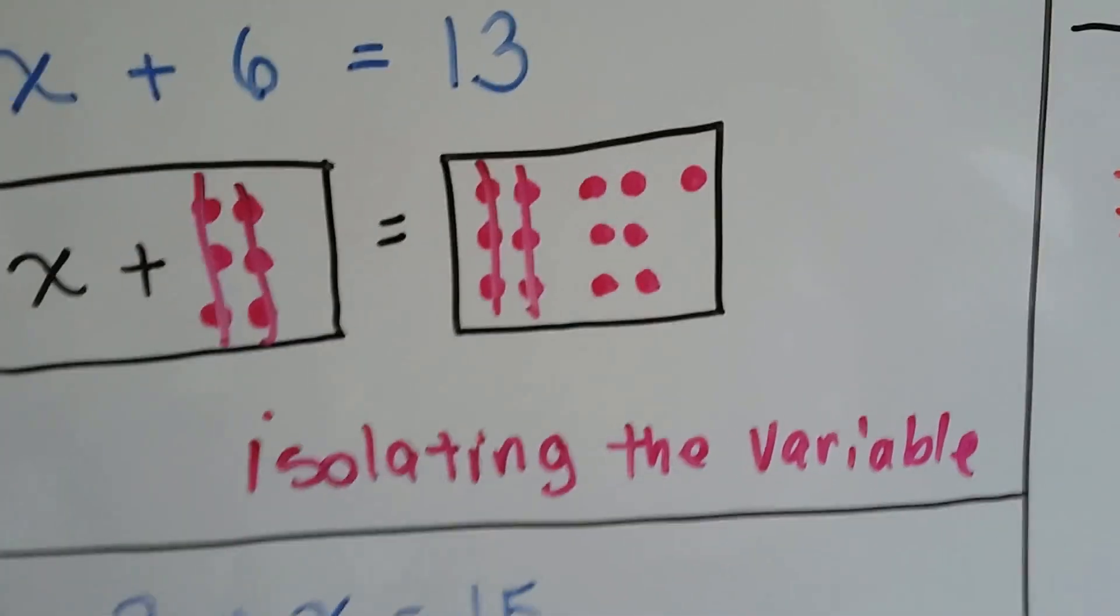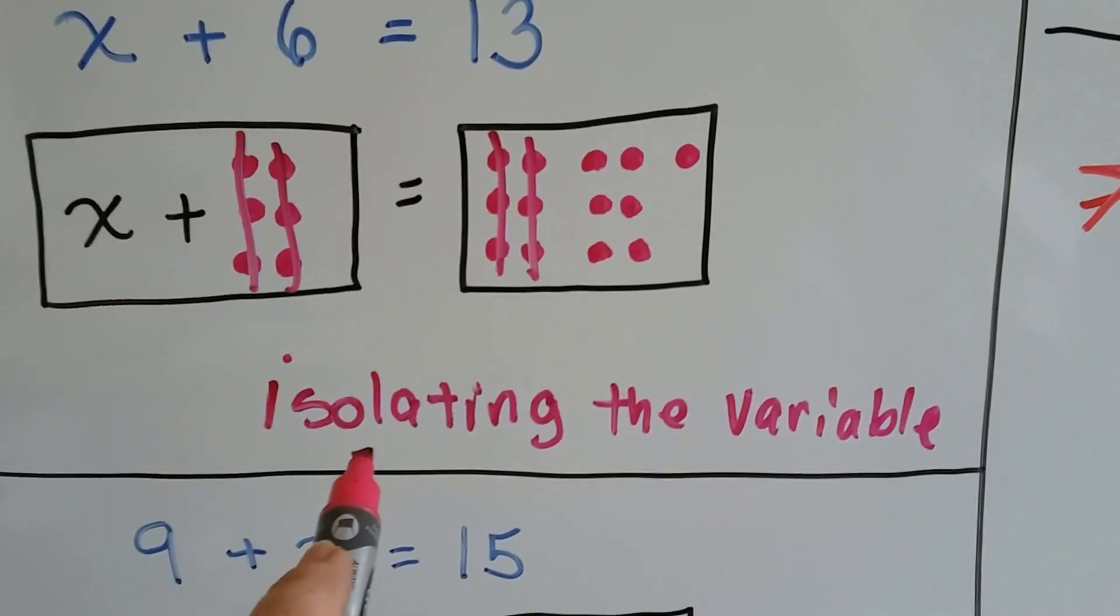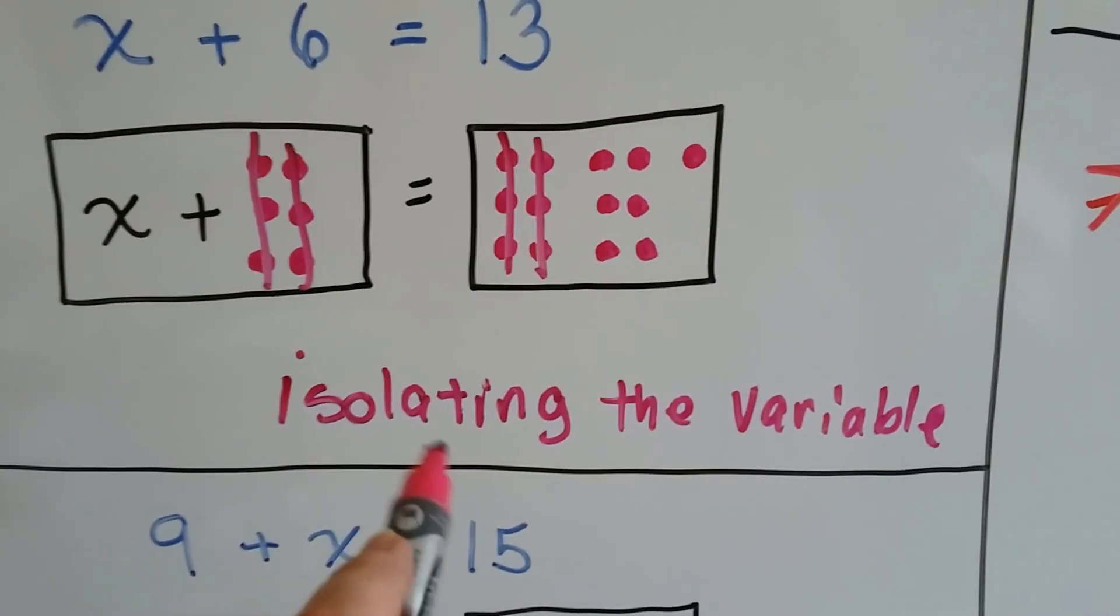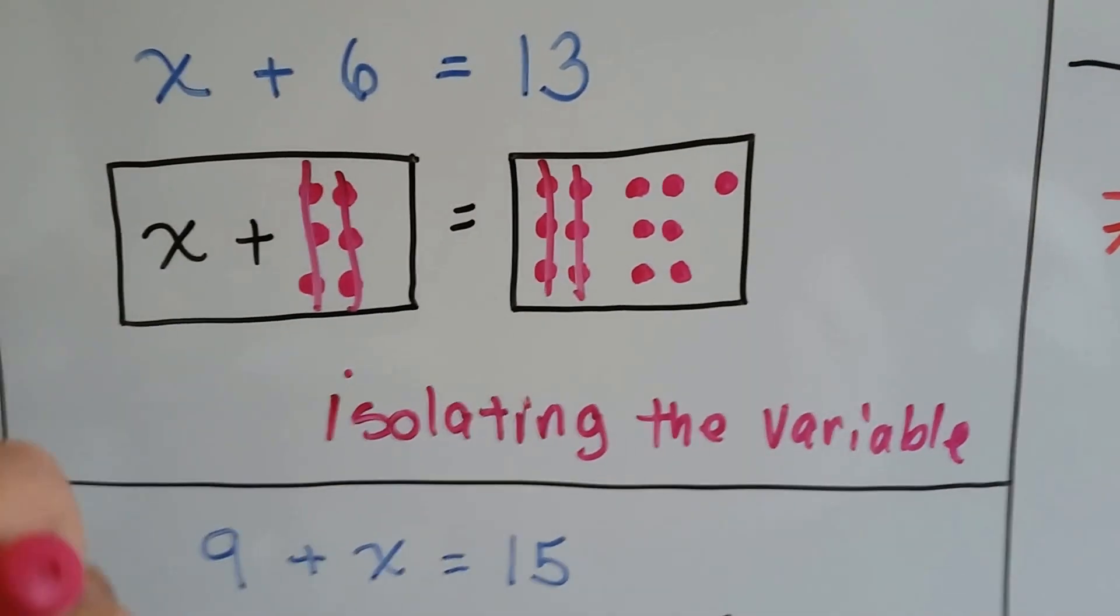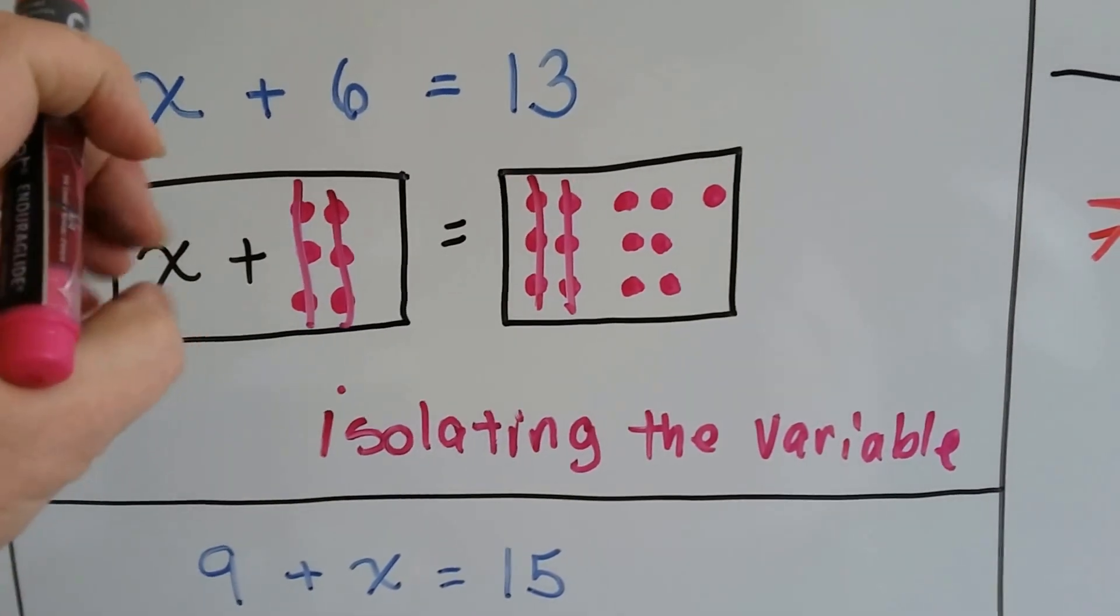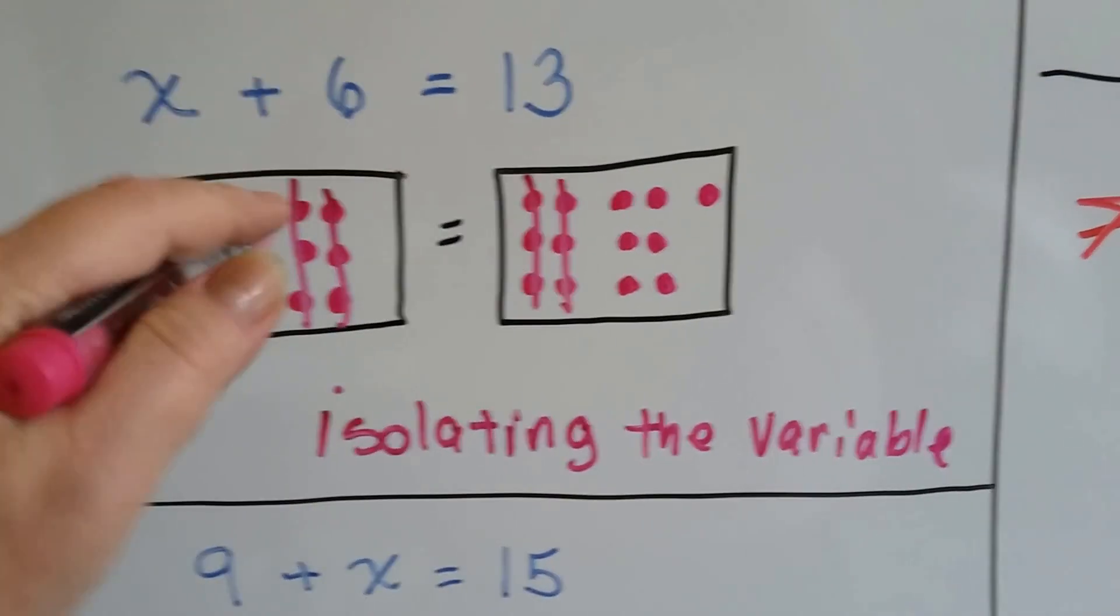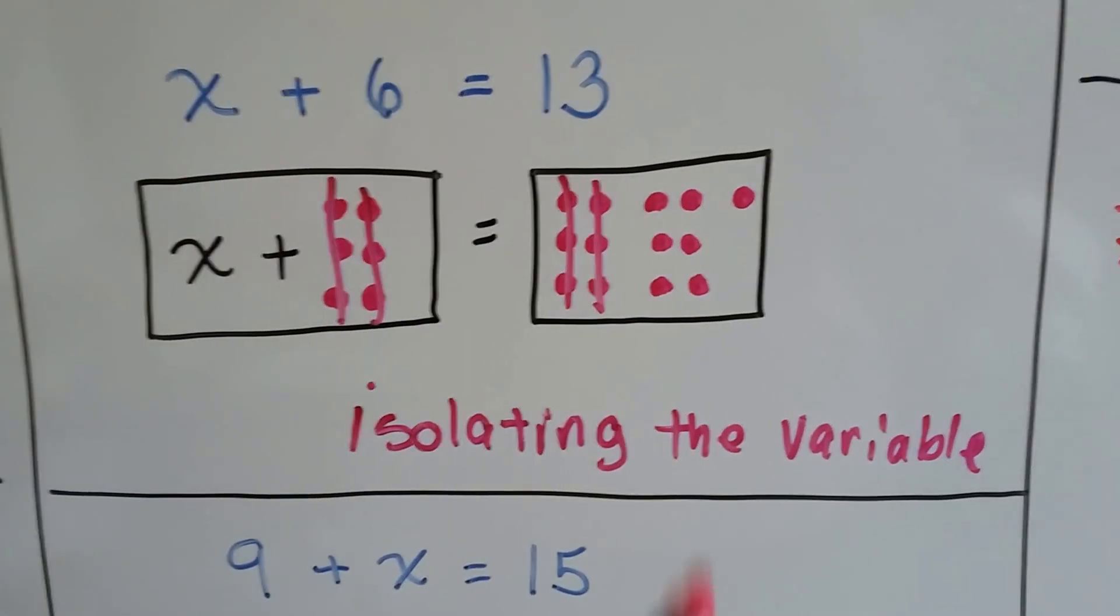When we isolate the variable, when something's isolated, it's all by itself. When you isolate the variable and it's all by itself, it's very easy to see what the answer is.